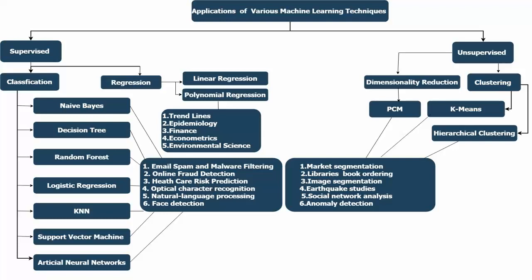Under supervised learning, we have again two categories: classification and regression. Classification supports categorical values and regression supports numerical values.